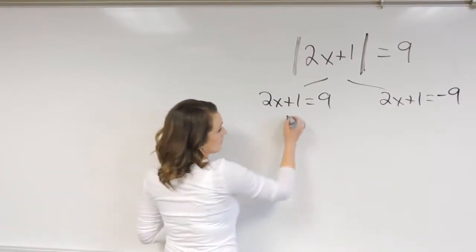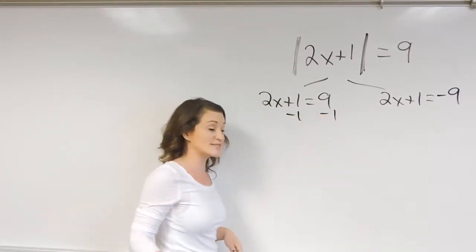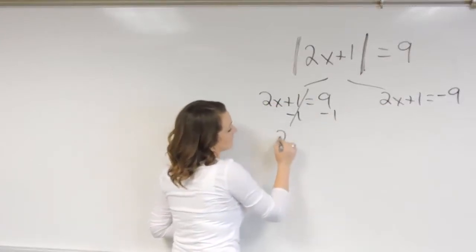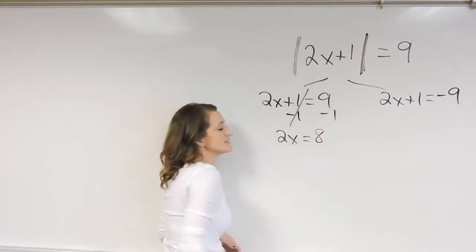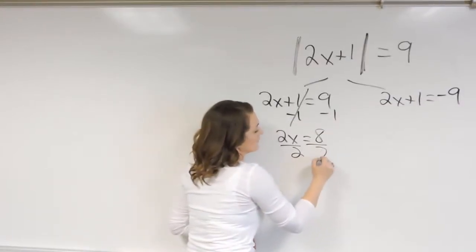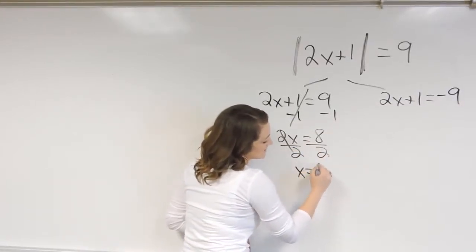So solving these two equations, we subtract 1 on both sides. 1 minus 1 cancels, and we drop down the 2x equals 9 minus 1 is 8. Divide out the coefficients, and we get that x equals 4.